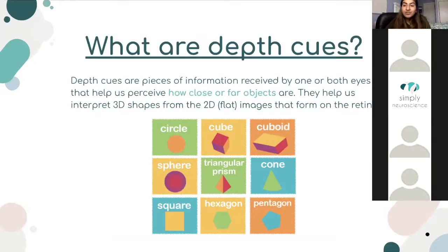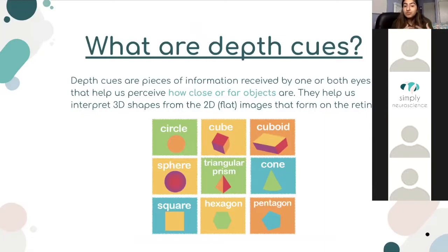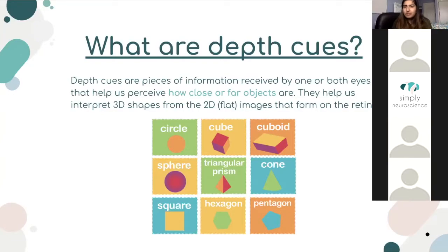Now we're going to start talking about depth cues. Depth cues are basically pieces of information received by either one eye or both, and they help us perceive how far or how close objects are. They help us interpret 3D shapes from 2D images that form on our retina. Think of your retina like a photograph — so how do you know that something's 3D even though it forms a 2D image? That's why depth cues are so important.